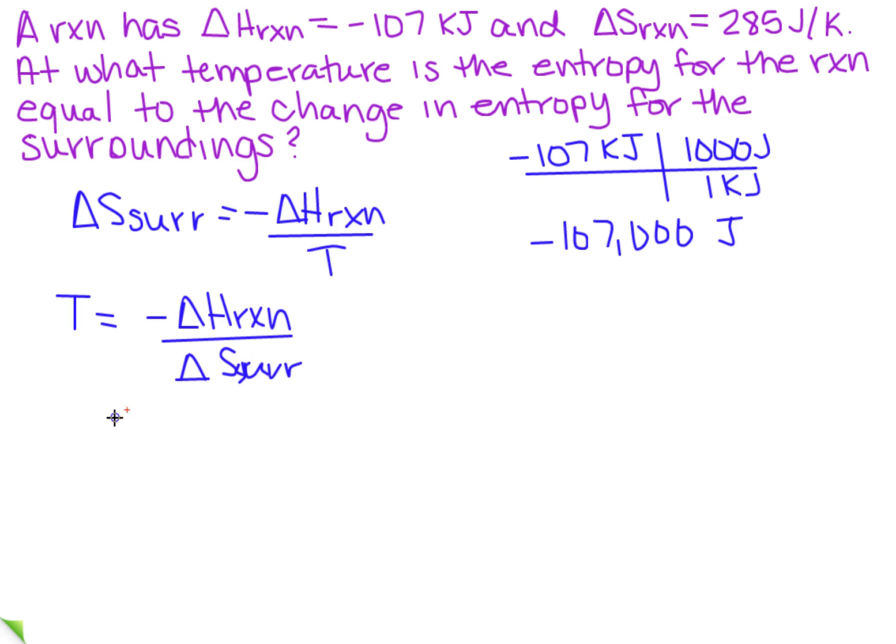So now that I have that, it's a little messy but I've got it. I'm going to plug in what I know. So when I converted the delta H of the reaction I have minus 107,000 joules. Over here I have 285 joules per kelvin.